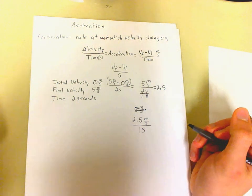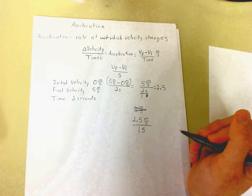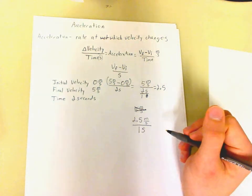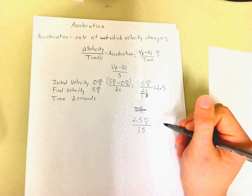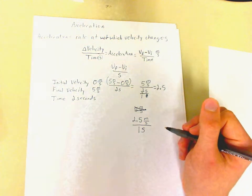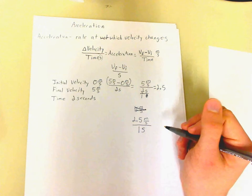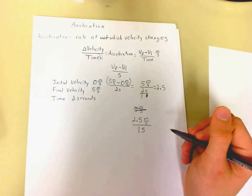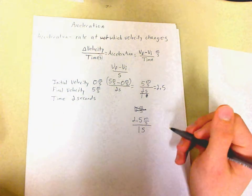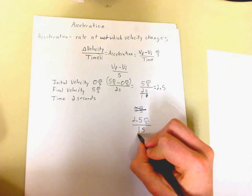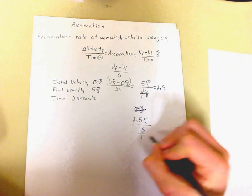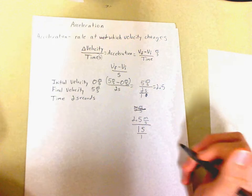Now remember in math class, we can't leave a fraction like this. We should clear the fraction. And the way that we do that is we have to multiply by the reciprocal. What's the reciprocal of this? Because 1s or 1 second is technically over 1.